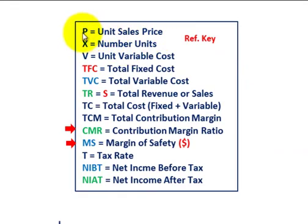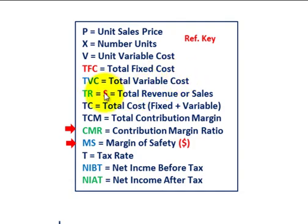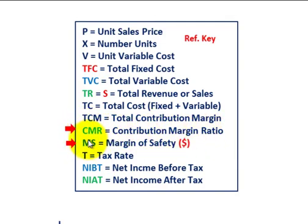For our reference key, what we're going to be using in our equations: P equals the unit sales price; X is the number of units we're selling, the quantity on a per unit basis. V equals the unit variable cost, again on a per unit basis. TFC equals our total fixed cost. TVC is the total variable cost. TR or S represents our total revenue or total sales. TC is the total cost — the fixed plus the variable cost. TCM is the total contribution margin. CMR equals our contribution margin ratio. MS equals the margin of safety in terms of dollars.